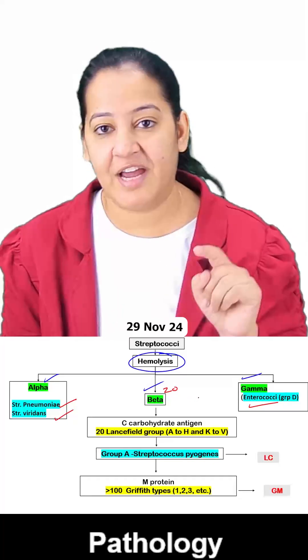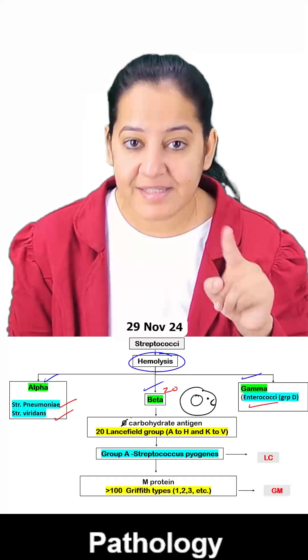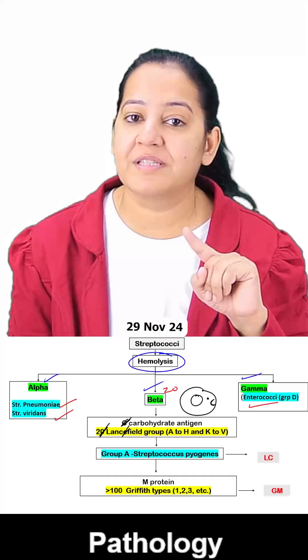What is the basis of the 20 types? This is the bacteria, this is the cell wall. In the cell wall, there is a carbohydrate known as group C carbohydrate. This is of 20 types, so it is classified based on this, and this classification is done by Lancefield.